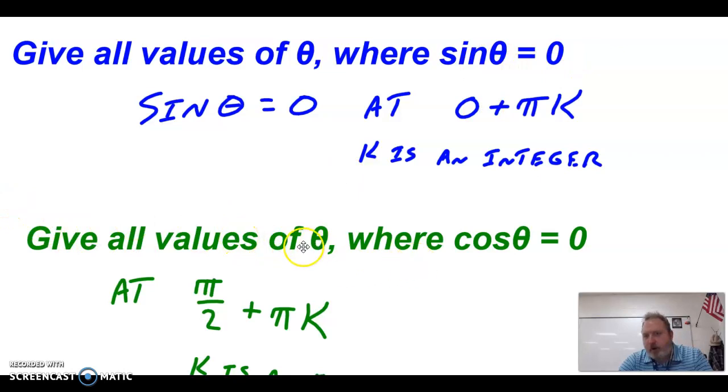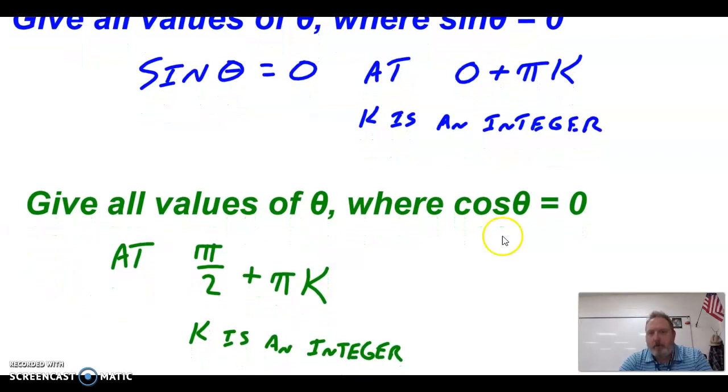Now if we do that for cosine, slightly different, cosine hits 0 at π/2, then 3π/2, 5π/2. So if we're going to do that for cosine, it would be π/2 plus πk. Again, where k is an integer. So for sine, every multiple of π, 0π, 1π, 2π, 3π, 0. For cosine, it's π/2. And then we go 3π/2, 5π/2, 7π/2, and so on.